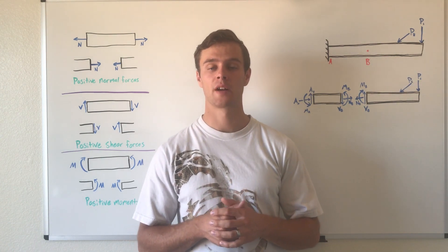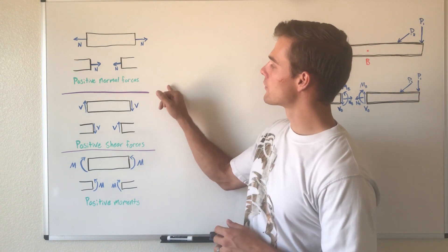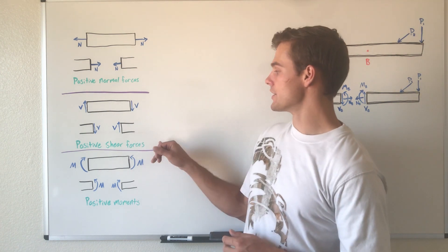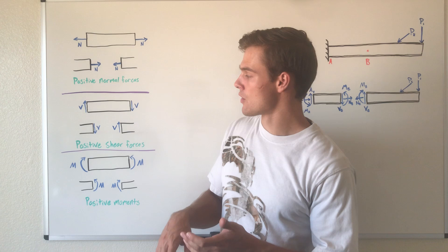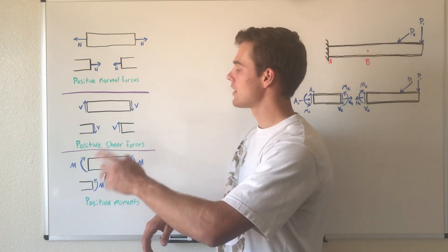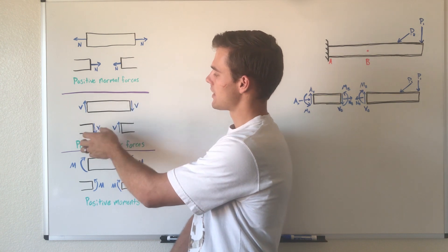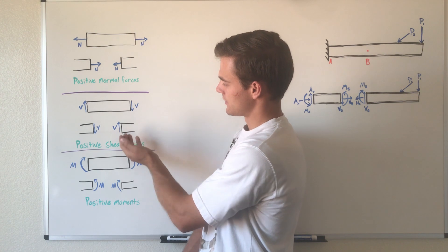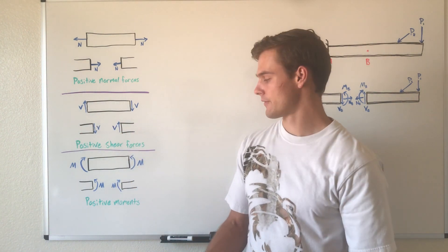The way you can tell whether those forces are positive or negative is conventionally: the normal force is positive if it's in tension. The shear force is positive if it causes the beam to rotate clockwise. If we put a pin here in the middle, these shear forces would cause this beam to rotate clockwise, and that's a positive force.